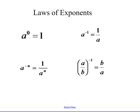We're going to start with our laws. Anything to the zero power is one, so x to the zero is one. Our negative exponents are flippers. If you have a to the negative one, you can write that as one over a. If you have a to the negative n, it's one over a to the n.